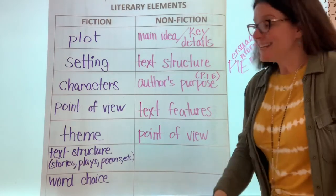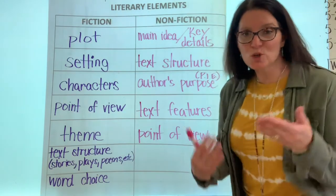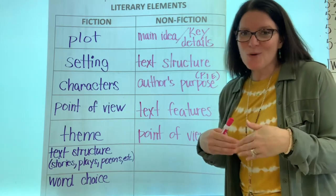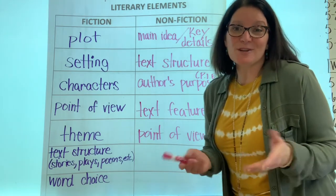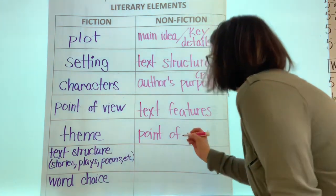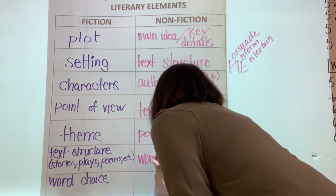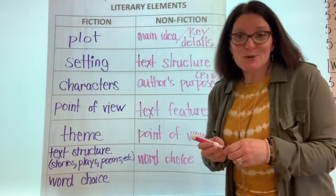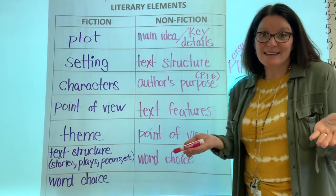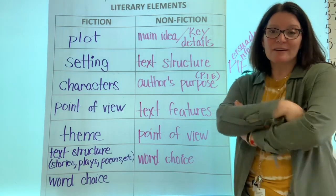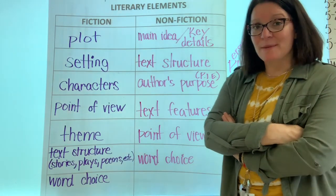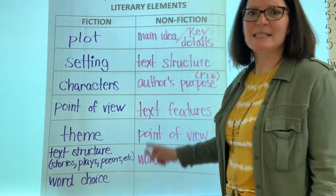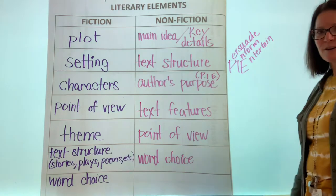And the last one is the same one we had for fiction: word choice. Word choice matters, and we don't always take such a close look at it. But now that we know it's a literary element, we might start paying more attention to it. Our words matter — how we say them, how we write them, which words we choose to use, when we use them. When you say something to your brother, sister, or mom, how you respond matters. It's the same with authors. How they write something matters. So word choice is an important part of literary elements.